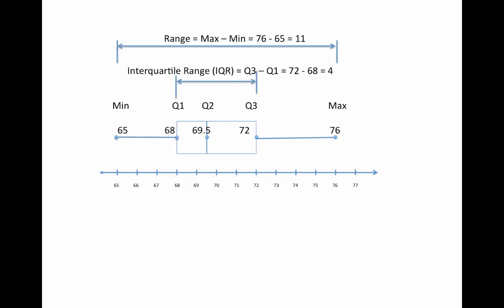There are two ranges here that you should be aware of. One is the range of the whole dataset, which is the maximum minus the minimum, which in this case is 76 - 65 = 11. Then there's the interquartile range, which is between Q3 and Q1.